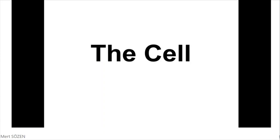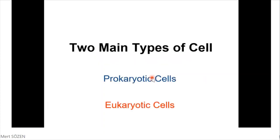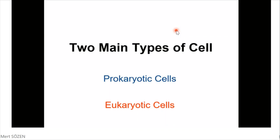Let's start our lecture and let's start learning about the cell, the structure and functions of the cell. To understand the cell, first of all, we have to look at the types of cells. There are two main types of cells: prokaryotic cells and eukaryotic cells. We have to split the cells into groups. These are the cells seen in all living organisms.